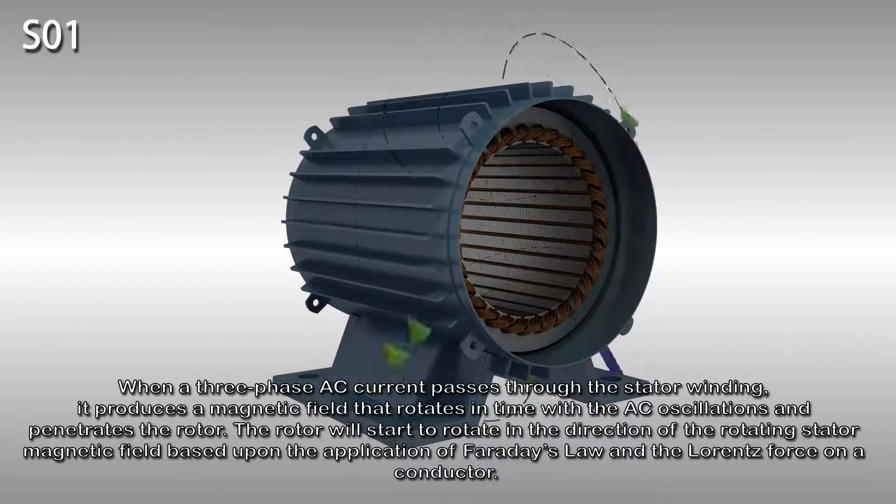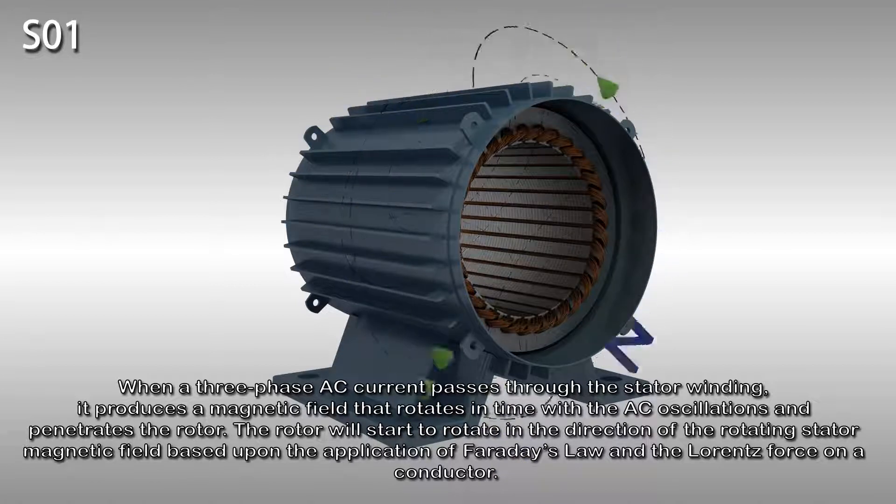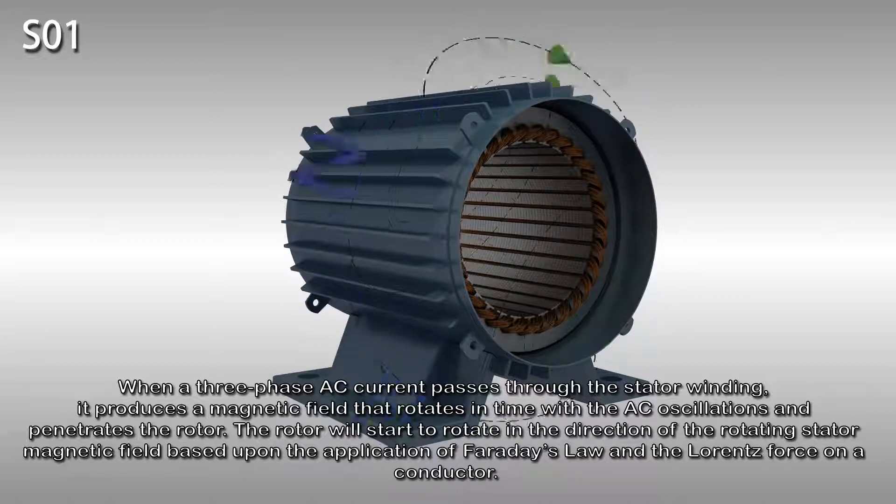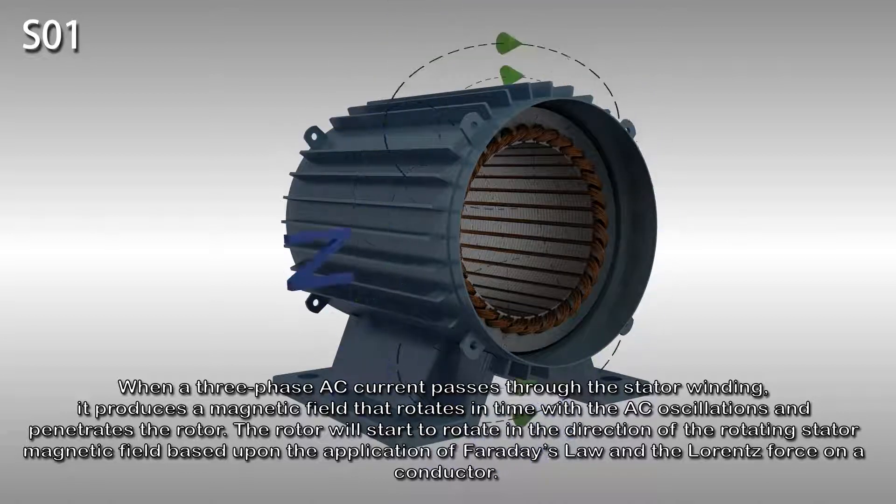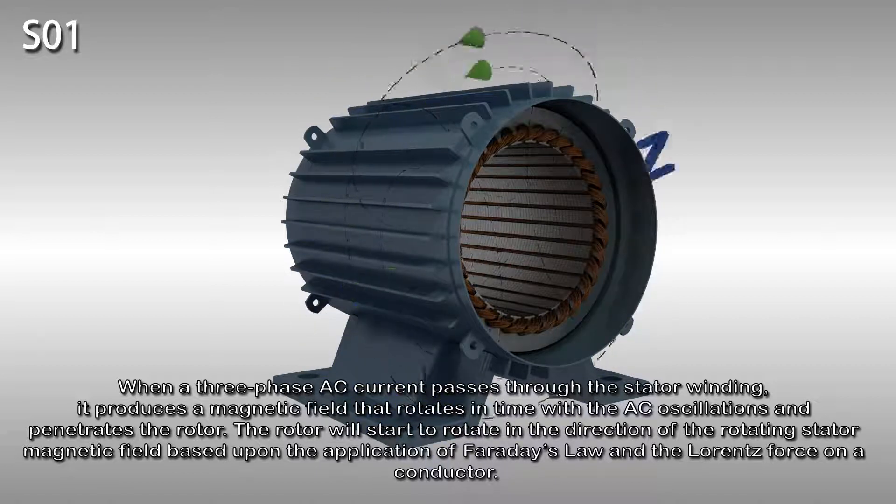When a three-phase AC current passes through the stator winding, it produces a magnetic field that rotates in time with the AC oscillations and penetrates the rotor. The rotor will start to rotate in the direction of the rotating stator magnetic field, based upon the application of Faraday's law and the Lorentz force on a conductor.